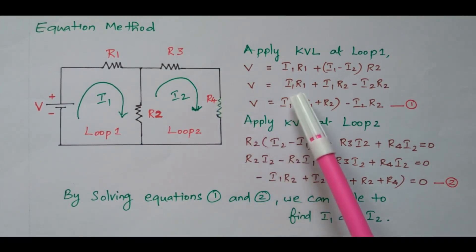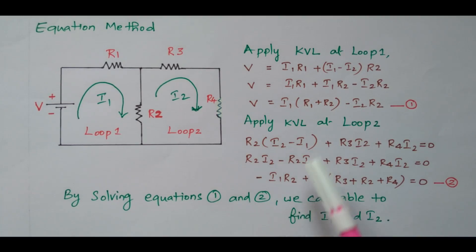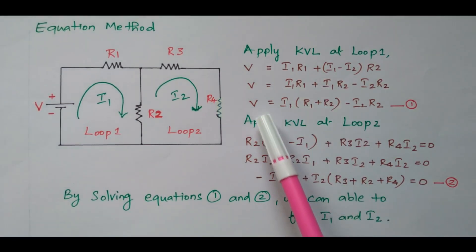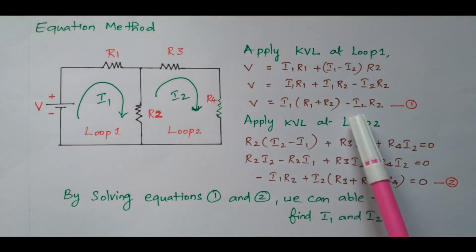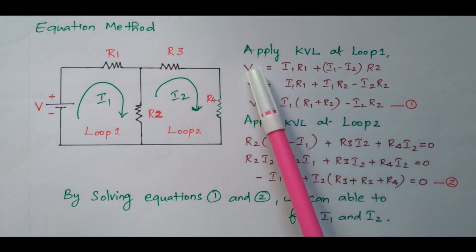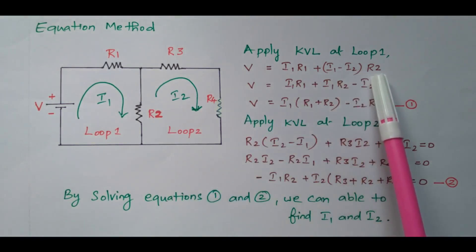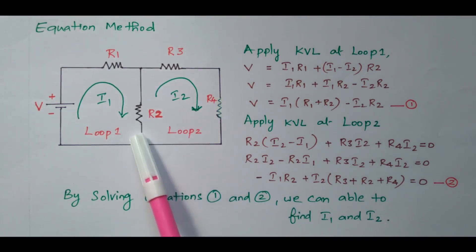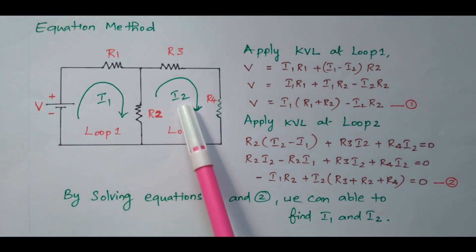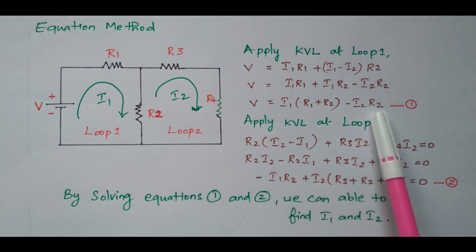So potential rise V equals potential drop: V = I1×R1 + (I1 − I2)×R2. After simplification: V = I1(R1 + R2) − I2×R2. This is equation number 1, derived by applying Kirchhoff's voltage law to loop 1.